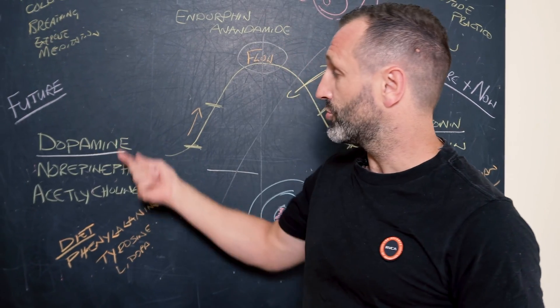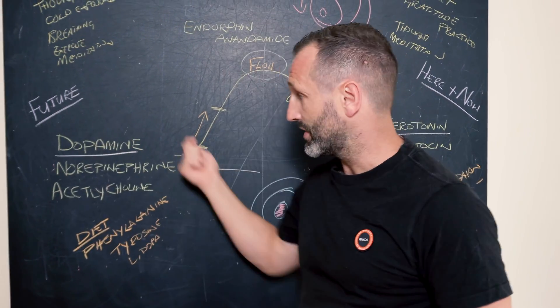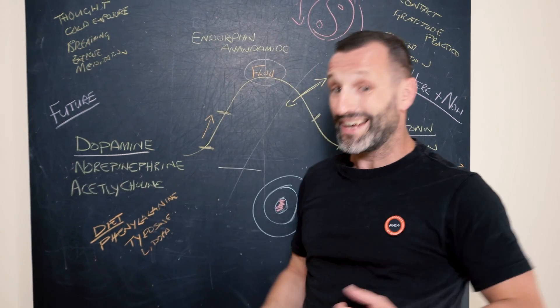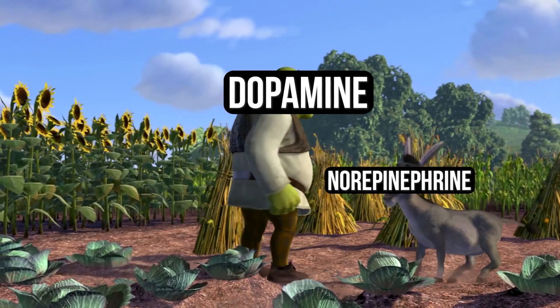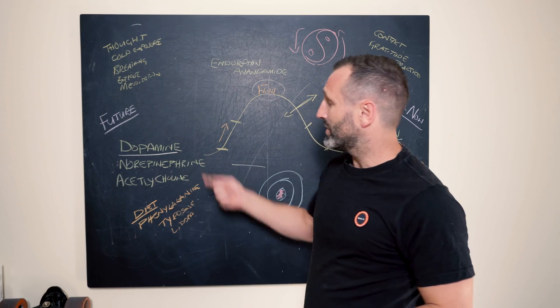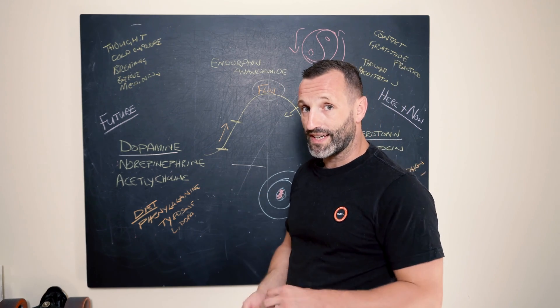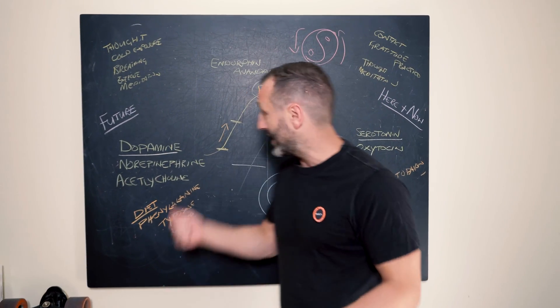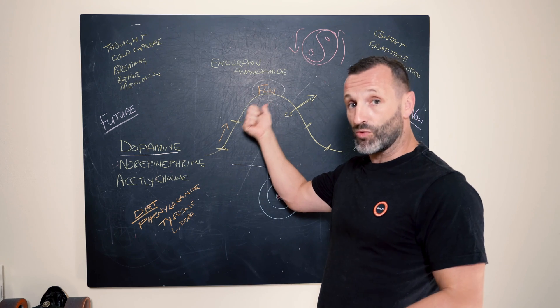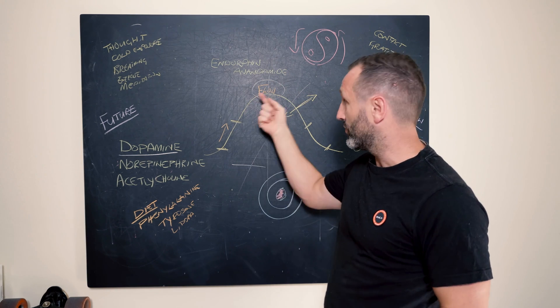Now, the norepinephrine and dopamine all fall into that same category there, catecholamines. They are best of buds. Whenever one goes, the other one closely follows behind. So dopamine and norepinephrine really are linked in, okay?